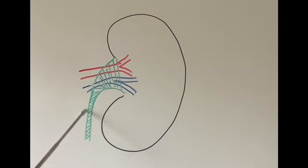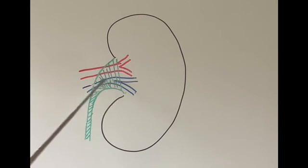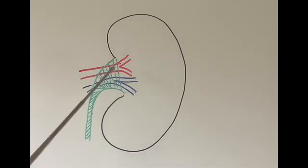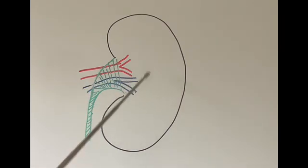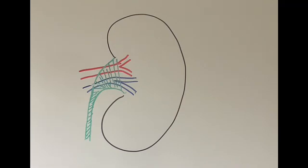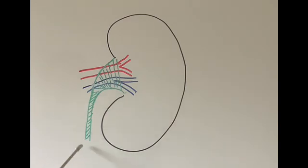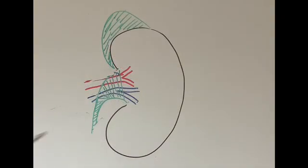The third structure that comes out of the kidney is the green structure I've drawn. At the top it looks like a funnel and at the bottom it looks like a tube — this is the ureter. It brings urine formed in our kidney out of the kidney and takes it to the urinary bladder before it's passed out of our body. The top funnel-shaped part is called the pelvis, and the bottom tube is the main ureter.